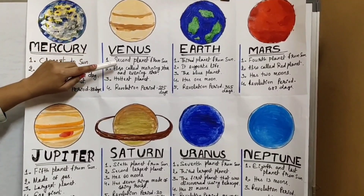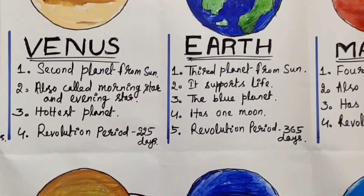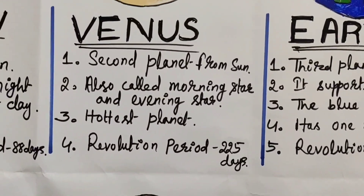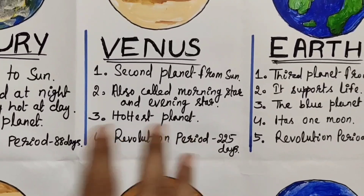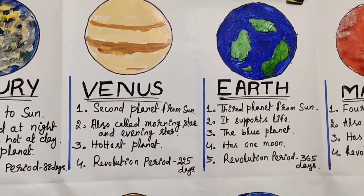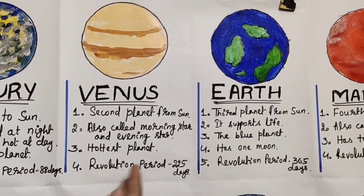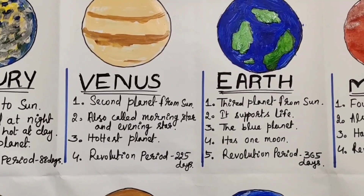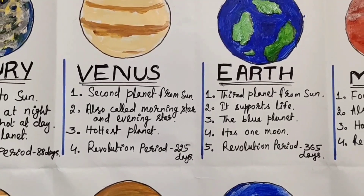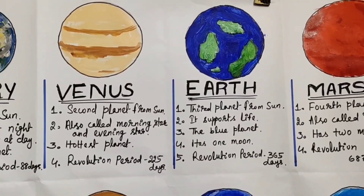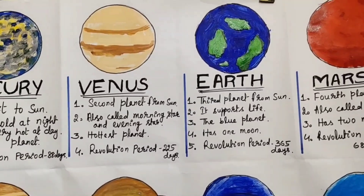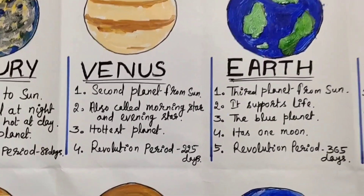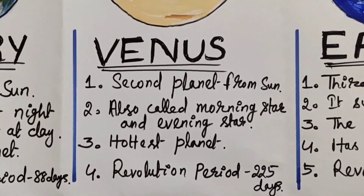Secondly, we have Venus. Venus is the second planet from the sun, also called the morning star and evening star. Why? Because sometimes at sunrise and sunset time, it is visible from the earth. It is also the hottest planet. Mercury is closest to the sun, but still Venus is the hottest planet — because it is filled up with hot gases. That is why it is the hottest planet. Its revolution period is 225 days.